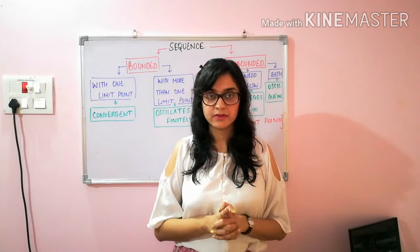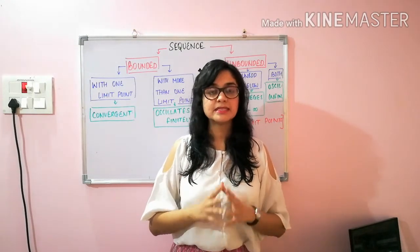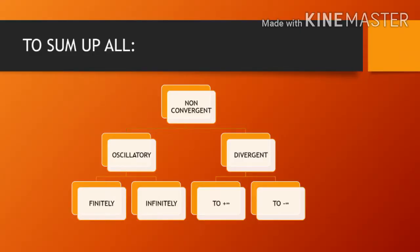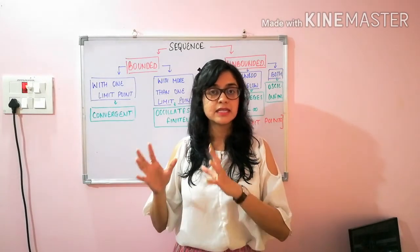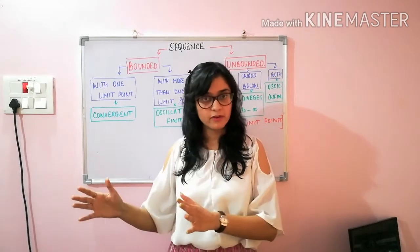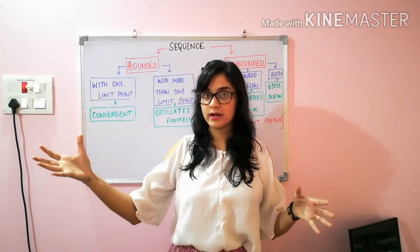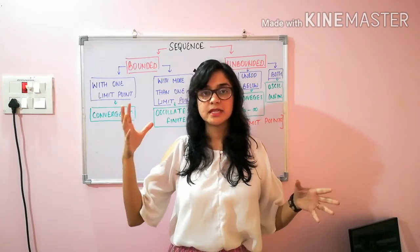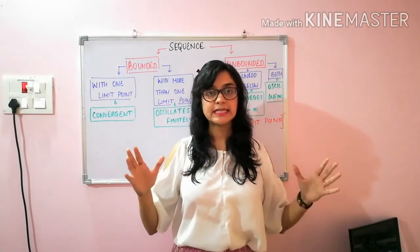Whenever we talk about non-convergent sequences, there are basically two categories: oscillatory sequences and divergent sequences. Oscillatory sequences have two subcategories: finitely oscillatory — meaning the sequence is bounded and has more than one limit point — and infinitely oscillatory — meaning the sequence is unbounded and has no limit point. For divergent sequences: a sequence diverges to plus infinity if it is not bounded above, and diverges to minus infinity if it is not bounded below. So this is the full picture of non-convergence.